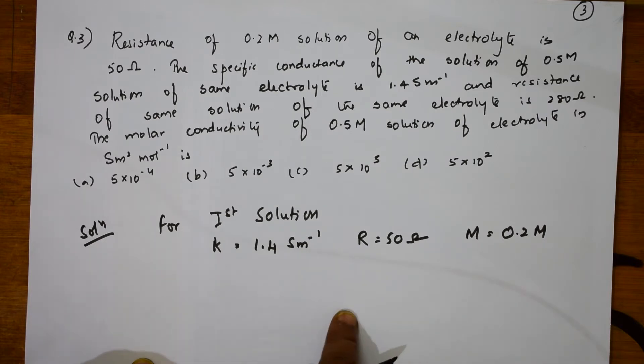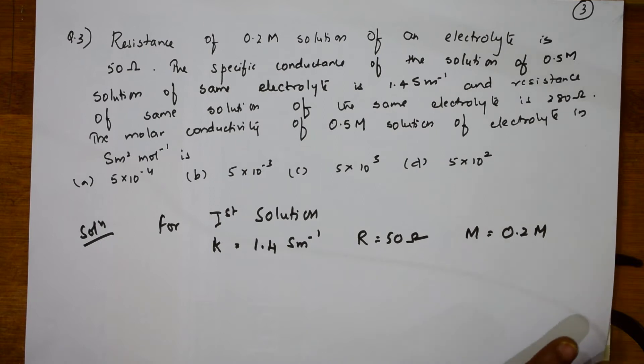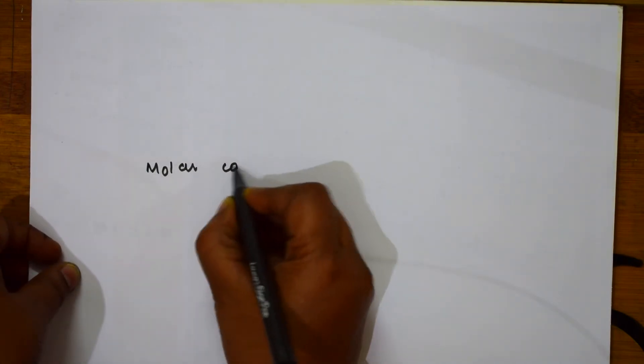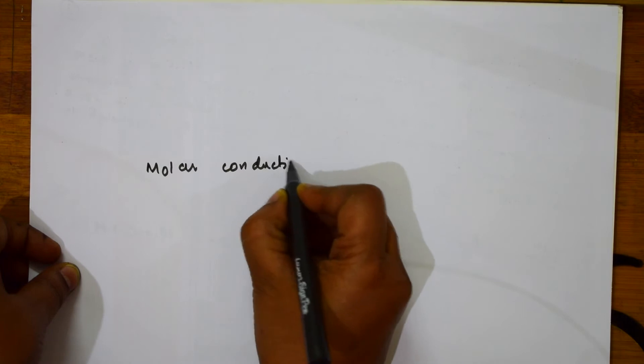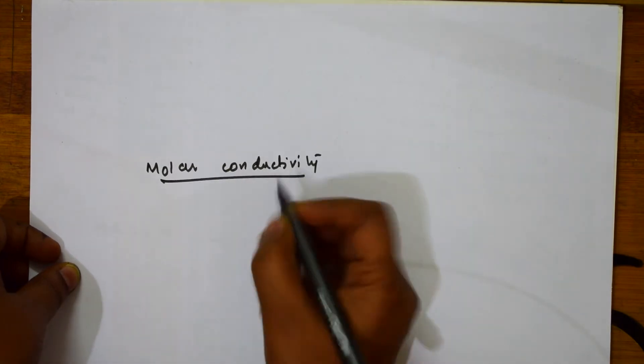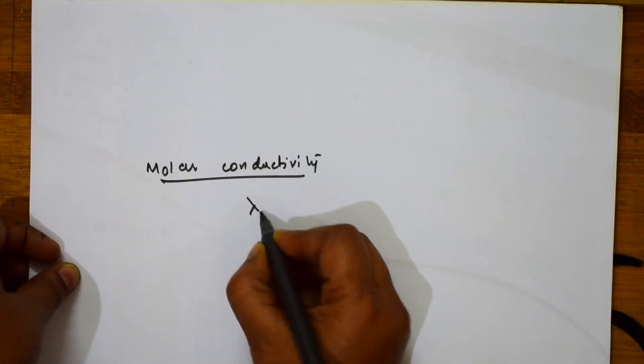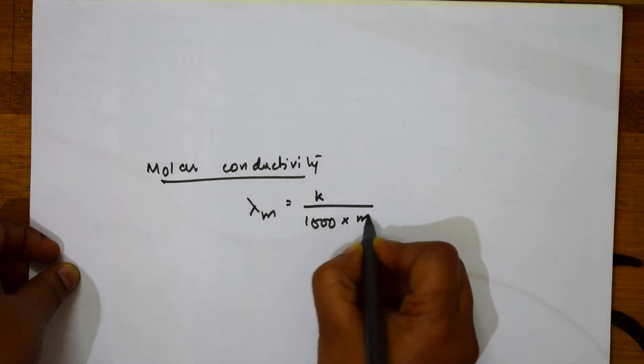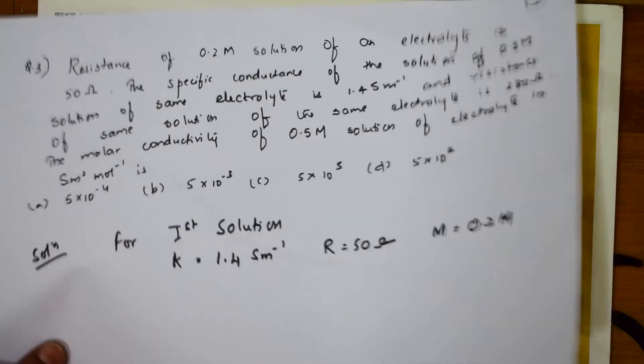Now, what should I find out? I have to find out the molar conductivity. Basically, what is the molar conductivity formula? Let me write that first. Molar conductivity formula which you have already learnt. That is lambda M is equal to kappa divided by 1000 into M. Now, let me come back.